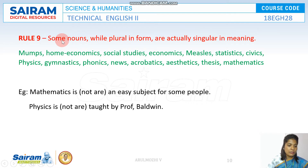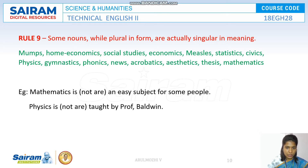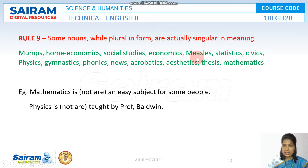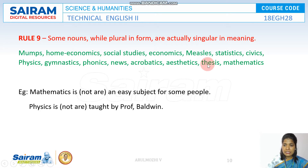Some nouns always seem to be plural in number, but they are not plural in nature — they are singular nouns. For example: mumps, economics, social studies, home economics, measles, statistics, civics, physics, gymnastics, phonics, news, aerobics, aesthetics, thesis, mathematics. These are examples that end with 's'.